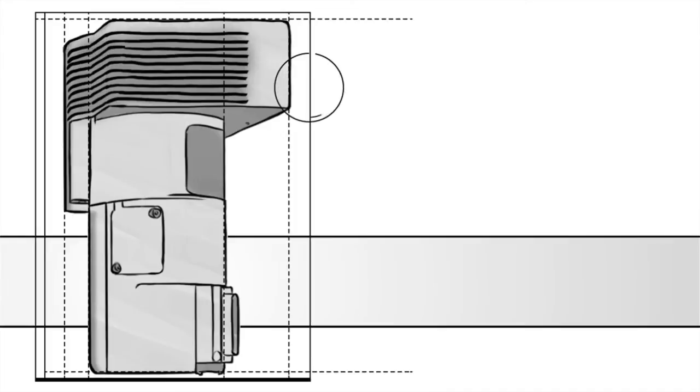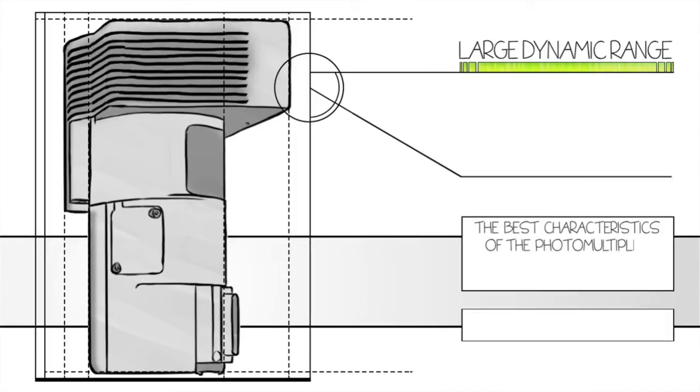The Hi-D combines the large dynamic range of photomultiplier tubes and the high sensitivity of avalanche photodiodes into one hybrid detector.